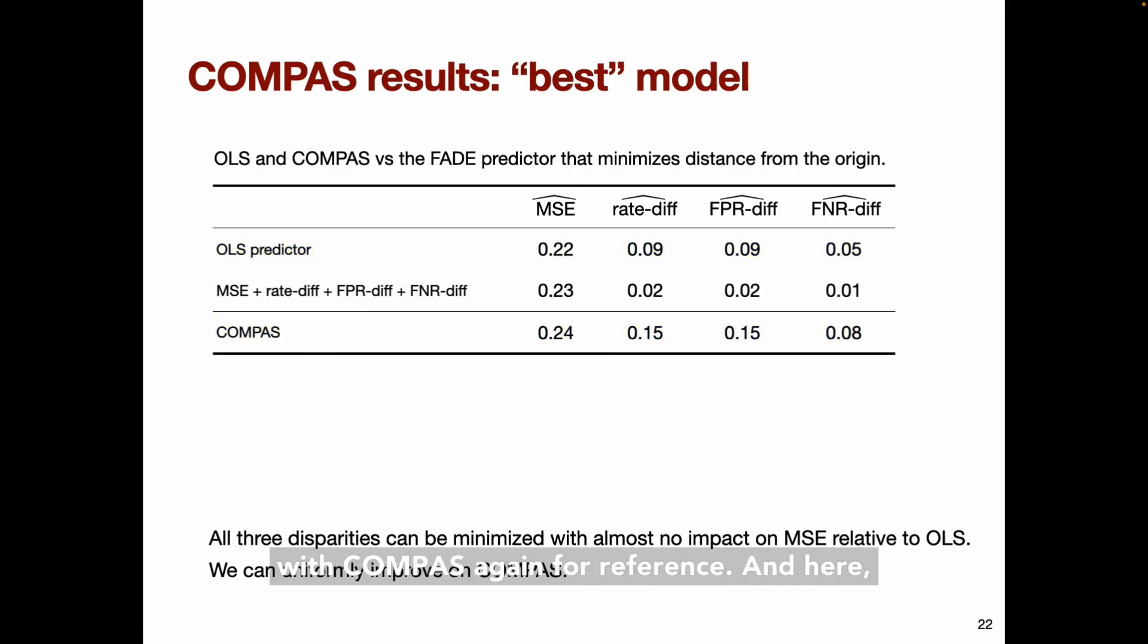So here we have the least squares predictor, with COMPAS again for reference, and here in the middle row we have the quote-unquote best model, meaning the model that minimizes the L2 norm of mean squared error and the three unfairness measures. We see that all three disparities can be minimized with almost no increase in loss relative to the OLS predictor, and that we can uniformly improve on COMPAS.